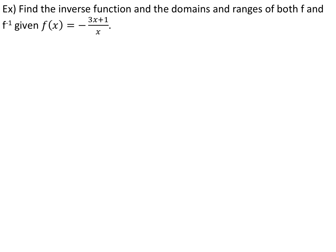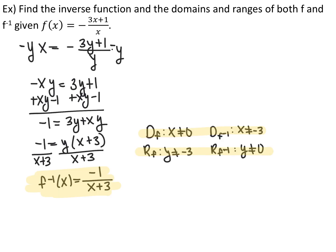Try this last one: find the inverse of f(x) = (−3x+1)/x and the domains and ranges for both f and f⁻¹. Interchange x and y to get x = (−3y+1)/y. Multiply both sides by negative y to cancel the y and eliminate the negative, giving −xy = 3y + 1. Move y terms to one side: −1 = 3y + xy. Factor out y: −1 = y(x+3). Divide both sides by (x+3): f⁻¹(x) = −1/(x+3). Domain of f: x cannot be 0; domain of f⁻¹: x cannot be negative 3. Applying to opposite ranges: range of f is y cannot be negative 3, and range of f⁻¹ is y cannot be 0.